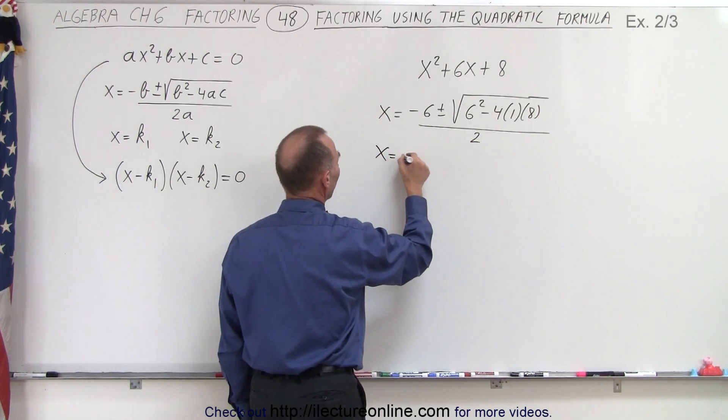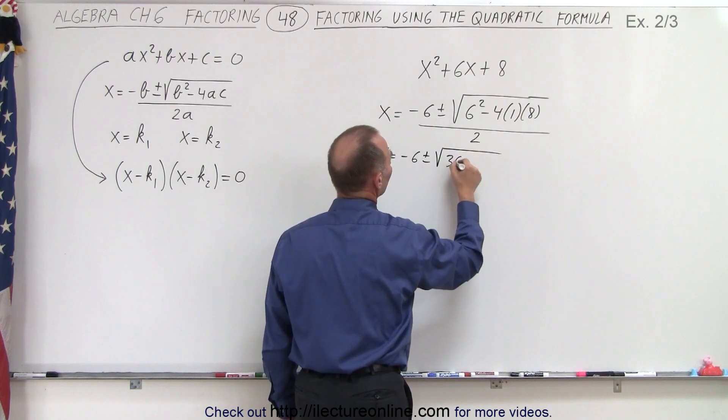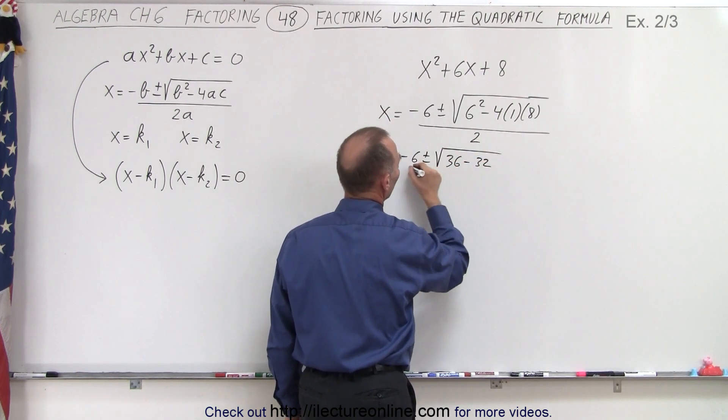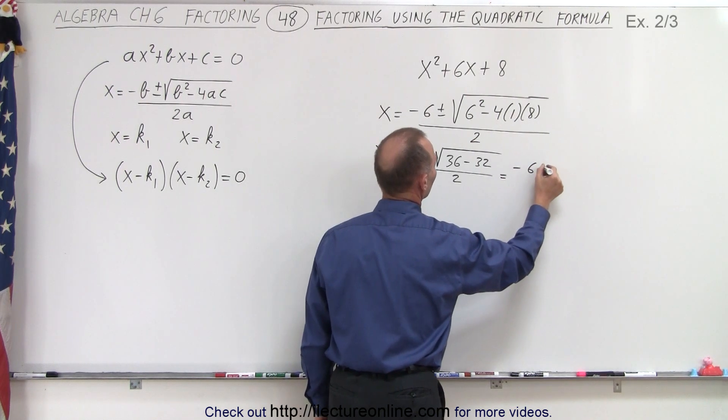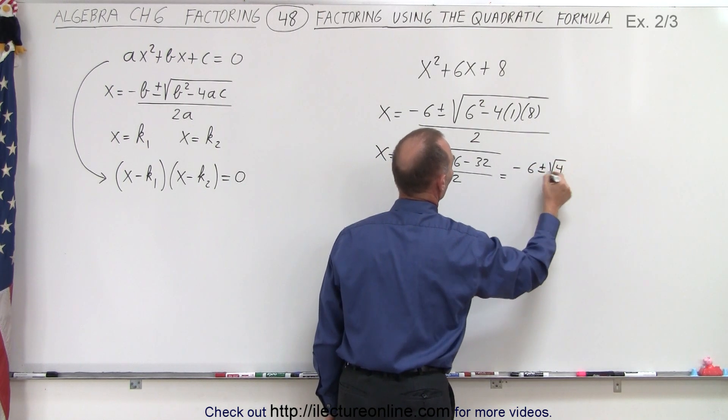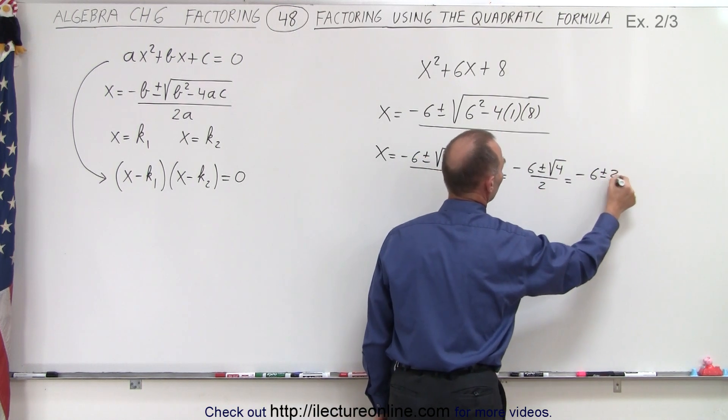Now simplifying that, we get x is equal to minus 6 plus or minus the square root of 36 minus 32, all divided by 2, which means that this is equal to minus 6 plus or minus the square root of 4 divided by 2, which is equal to minus 6 plus or minus 2 divided by 2.